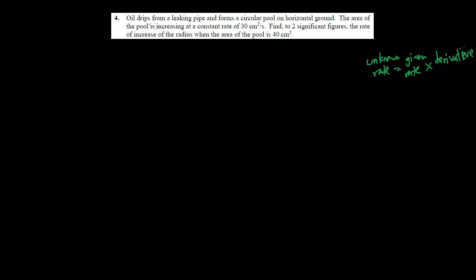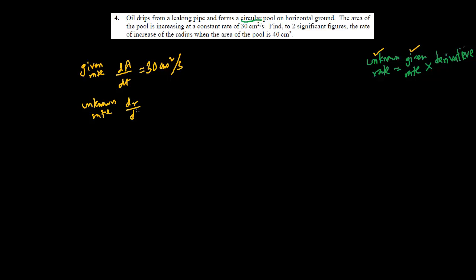Oil drips from a leaking pipe and forms a circular pool on horizontal ground — so we have a circular shape. The area is increasing at a constant rate of 30 cm² per second, so the given rate is dA/dt = 30 cm²/s. We need to find the rate of increase of the radius, dr/dt, to two significant figures.